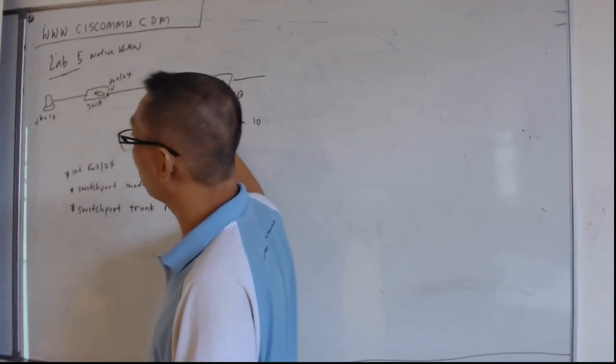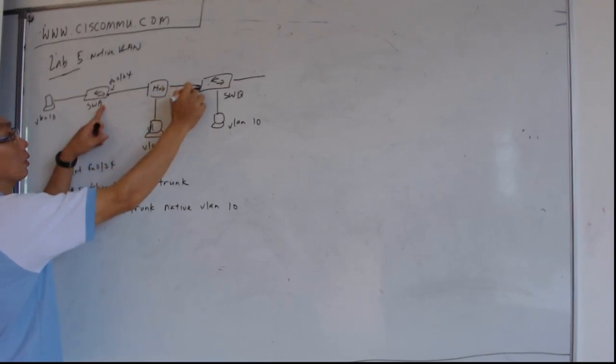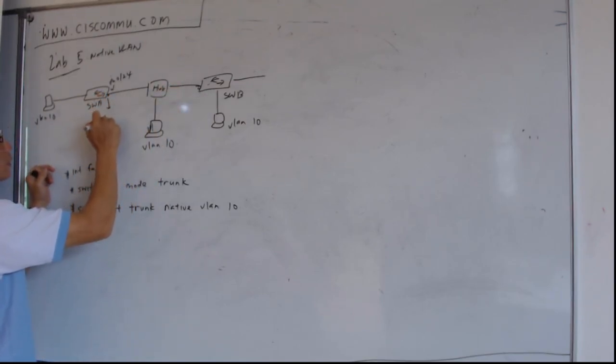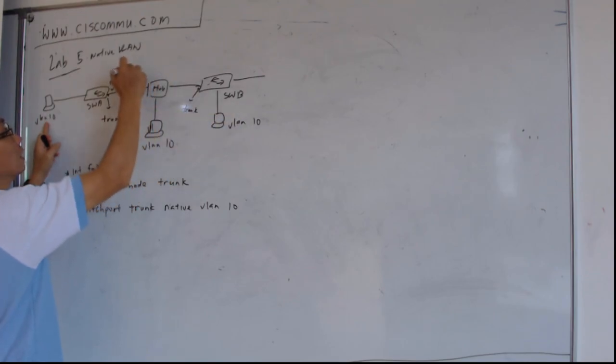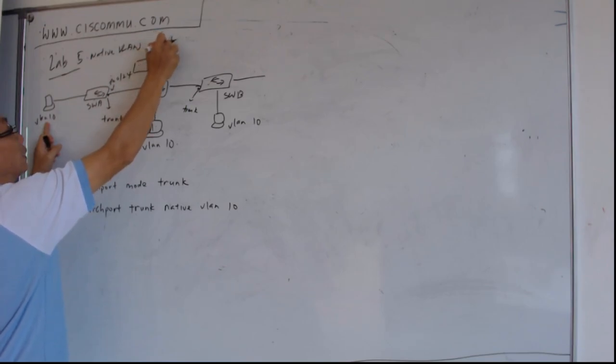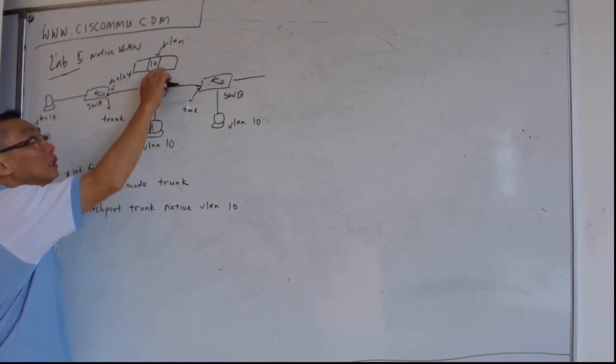Suppose in this scenario, these two ports will be in the trunk port. So let's say this packet, this frame sent over to here, there will be a tag, a VLAN tag. But in between this port, this trunk port, there's a hub here.